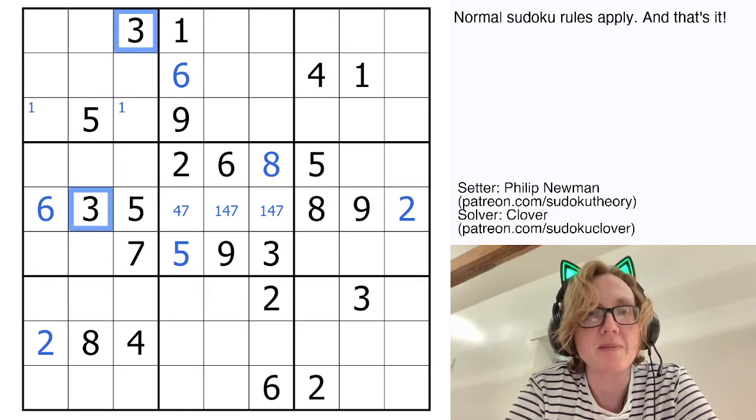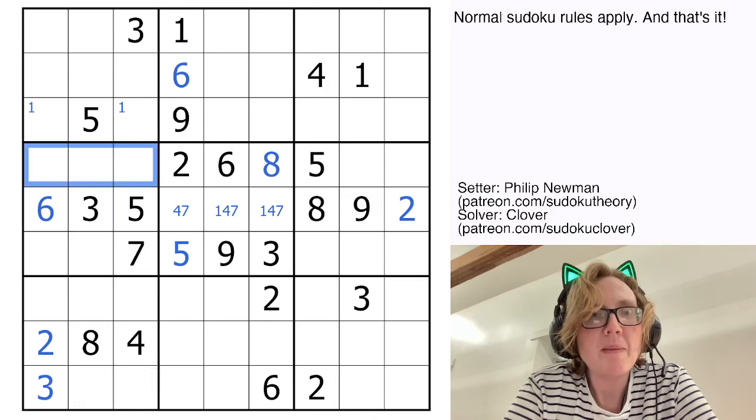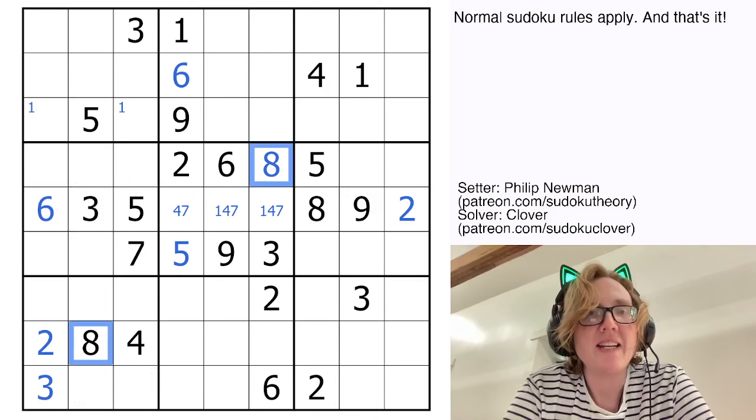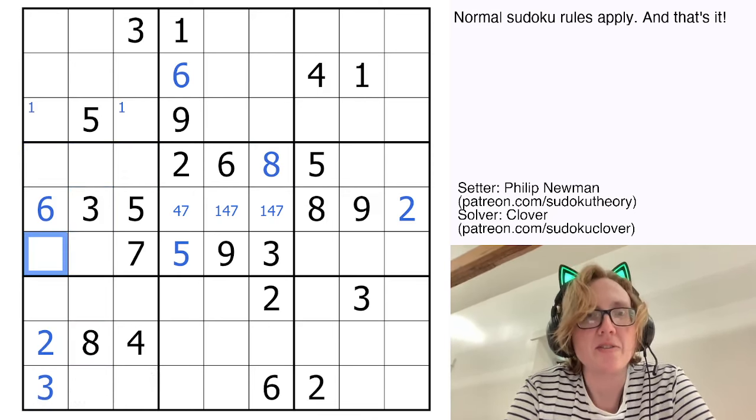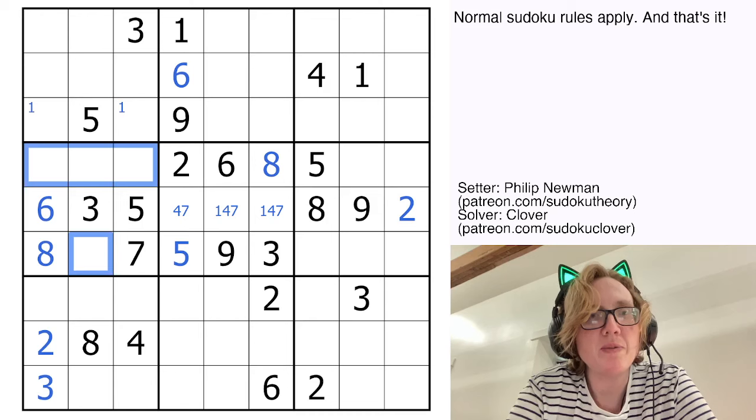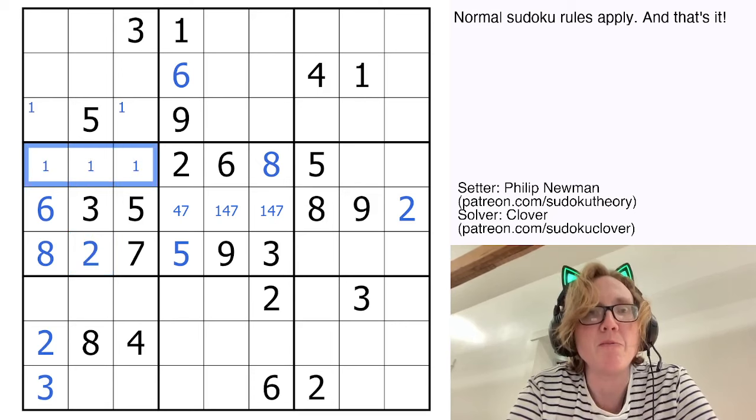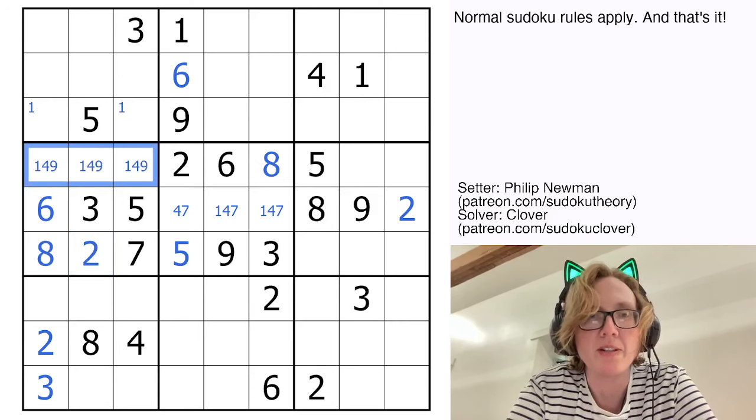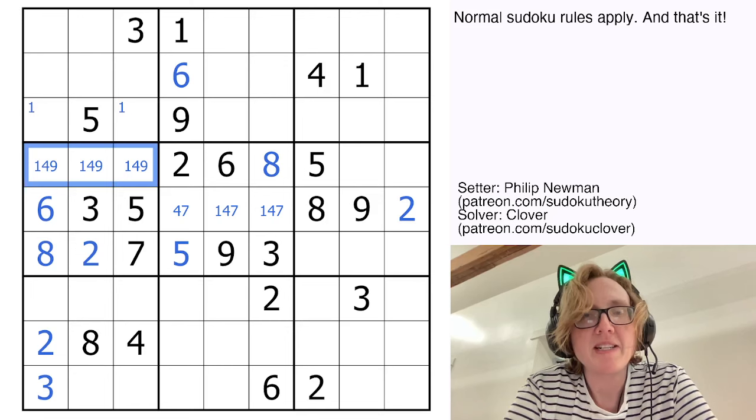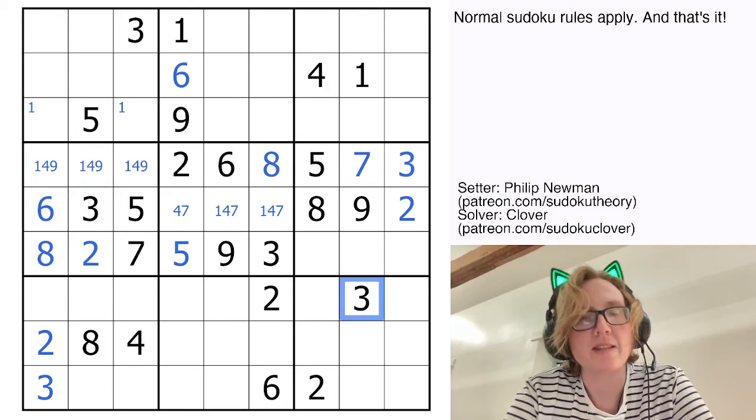The 2 3s here plus my 3 here tells me that the 3 in this region can only go in that position. My 8 there plus an 8 there, they see all of these cells, so I'm going to have an 8 right here. I need a 1, a 2, a 4, and a 9 to finish this region, and the 2 will go right there. These will be a 1, 4, 9 triple. Now I need a 3 and a 7 to finish row 4, which will go in those positions, thanks to the 3 right there. I need 1, 4, and 6 here.